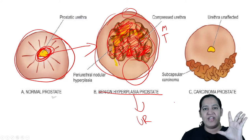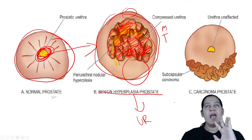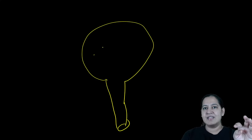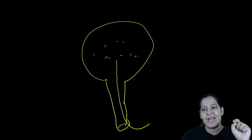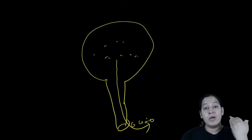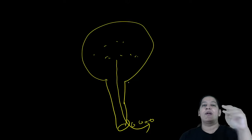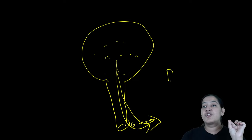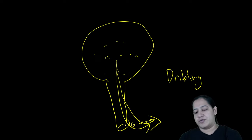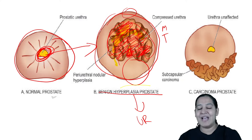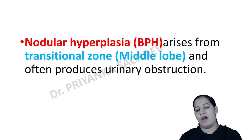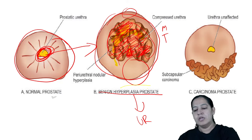This is a typical complaint of BPH: dribbling of urine, urinary retention, or urinary obstruction in a male over 50 years. The treatment is transurethral resection of the prostate (TURP) — you go via the urethra, resect the prostate, and take it out. It is suture-less surgery. After the resection, cut the prostate and make a slide to examine the histology.